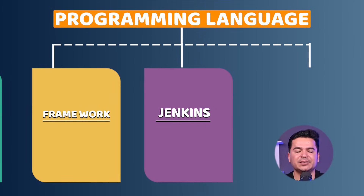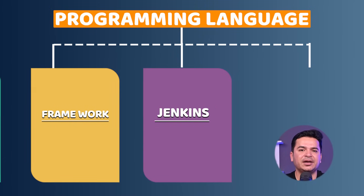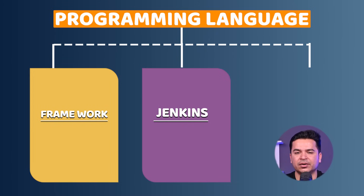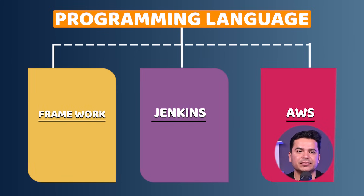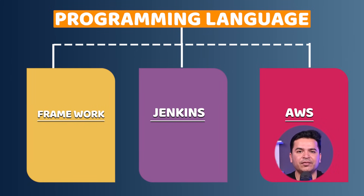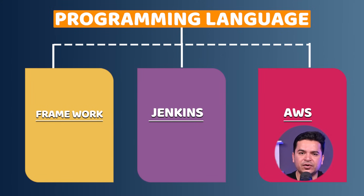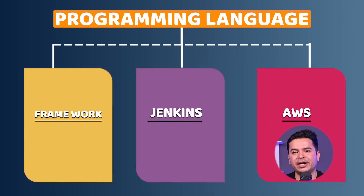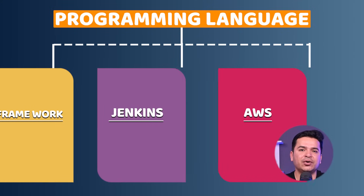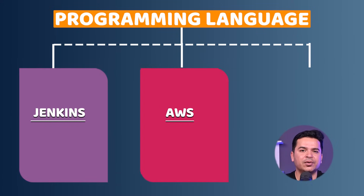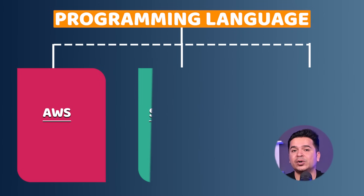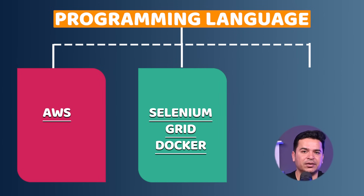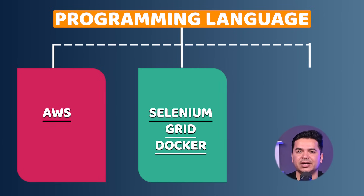Obviously we will be focusing on Selenium and Java as well, but CI/CD and framework are the main areas interviews focus on. Once you're done with this, we will shift everything to AWS, our cloud platform. Whatever we do locally first, we'll then move to AWS — setting everything up on the cloud, moving our Jenkins to AWS EC2 instances, and setting up our Selenium Grid with Docker. That is how we work in real time, and we will replicate exactly the same in our training program.